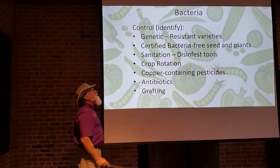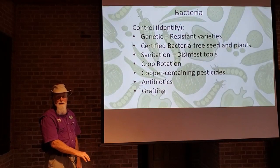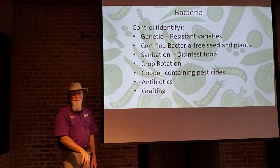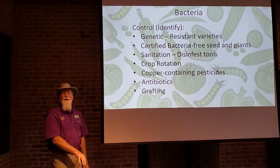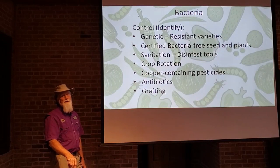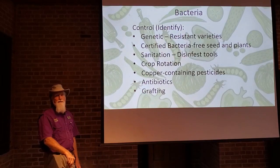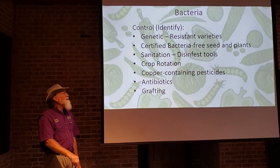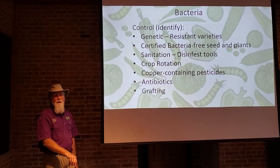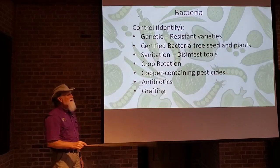Crop rotation is another way to control bacterial diseases — changing out crop families. A lot of these diseases are very specific to particular plants or plant families. Most pathogenic bacteria have a hard time living outside the plant host, so by rotating crops, you take the bacteria's food away. It starves over a couple of years, and you can come back with the same crop later without the disease problems.